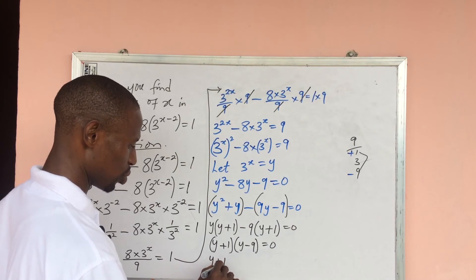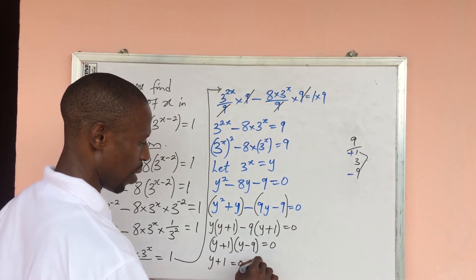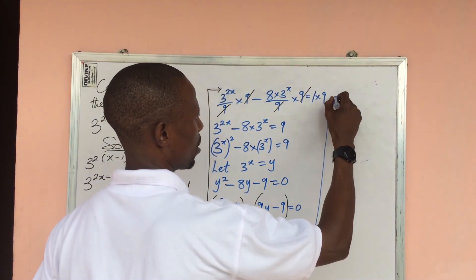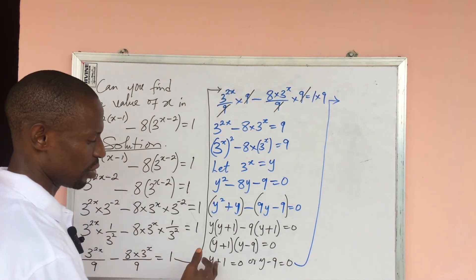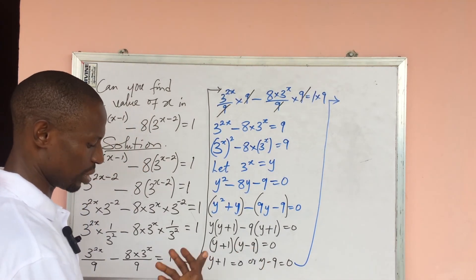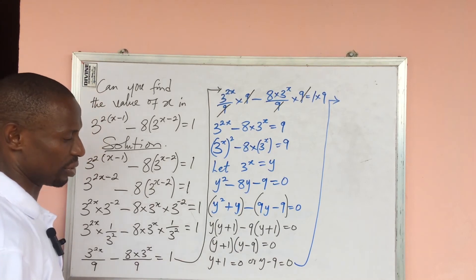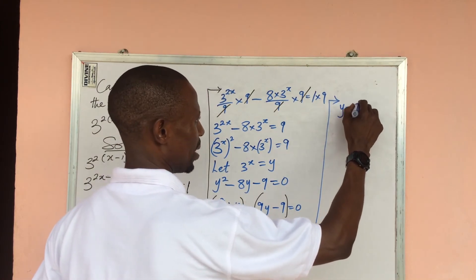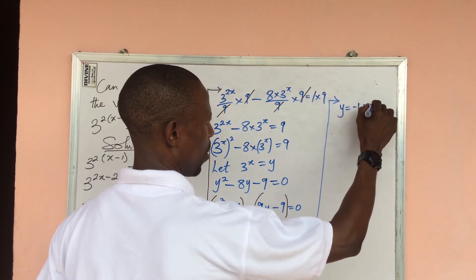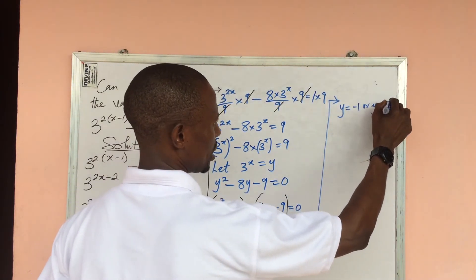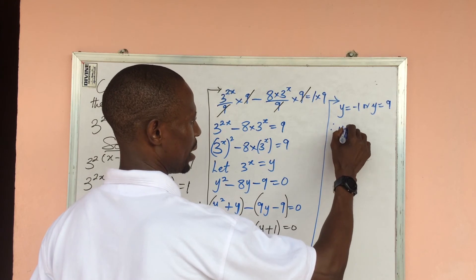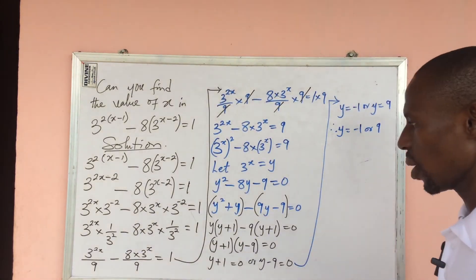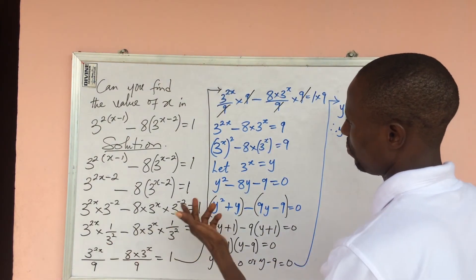Equating each bracket to zero: y + 1 = 0 gives y = −1, and y − 9 = 0 gives y = 9. Therefore, y equals minus 1 or positive 9.